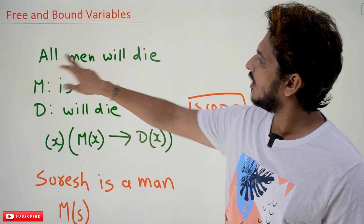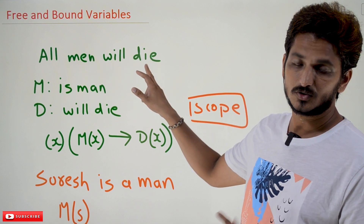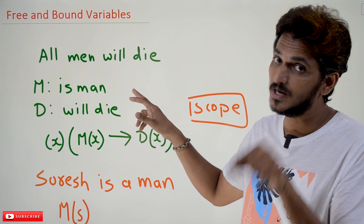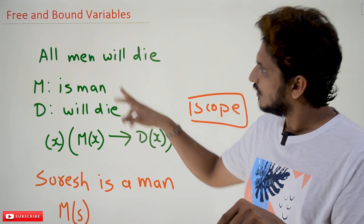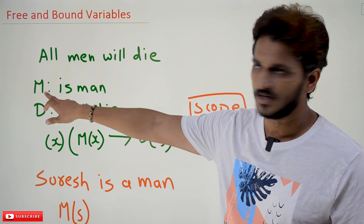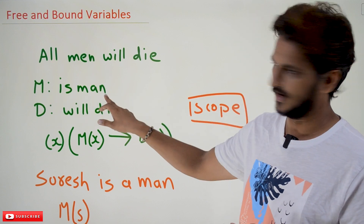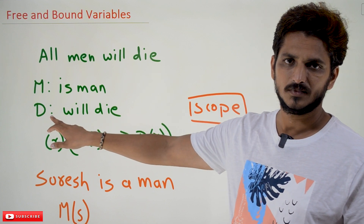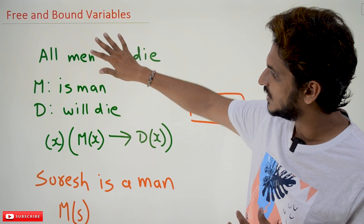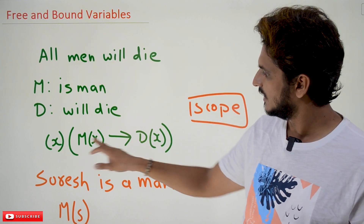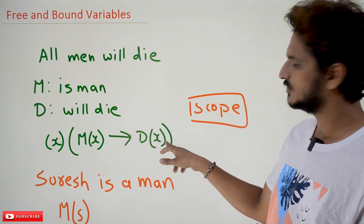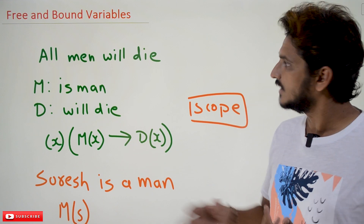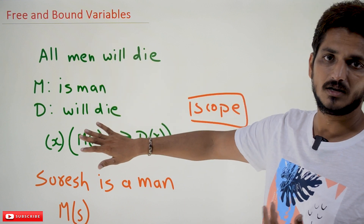Let's take an example: all men will die. So how are we going to write this statement in predicate logic — these discussions were made previously. In this we have two predicates: M is a predicate called 'is a man,' and D is a predicate called 'will die.' So we write this statement as: for all x, if x is a man then x is going to die — M(x) implies D(x). This is how we write this statement in predicate logic.